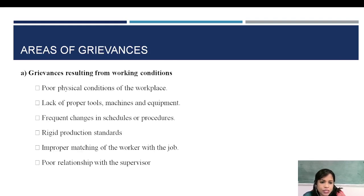Next, what are the areas of grievance? The first area is grievances resulting from poor working conditions. If the physical infrastructure and working conditions are not properly provided to employees, or if materials, machines, tools, or equipment are not readily available, employees may fall behind in their work and fail to attain their goals or improve their performance.